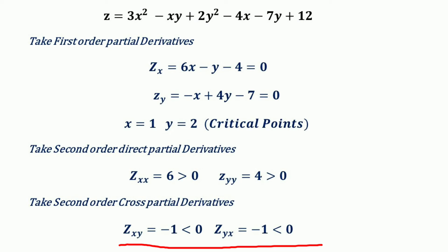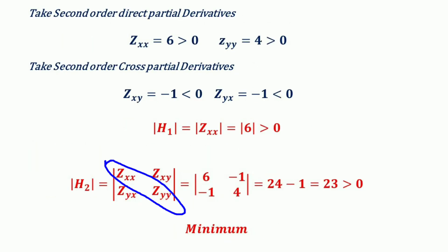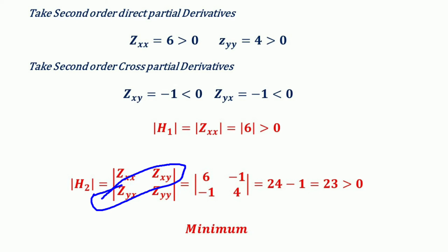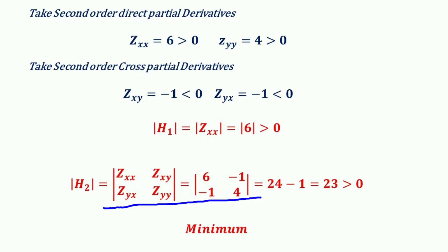We arrange the second order partial derivatives such that the direct partial derivatives are on the principal diagonal and the cross partial derivatives are on the off-principal diagonal — this is the Hessian matrix. Here z_xx = 6 and z_xy = −1 form the first row, and z_yx = −1 and z_yy = 4 form the second row.